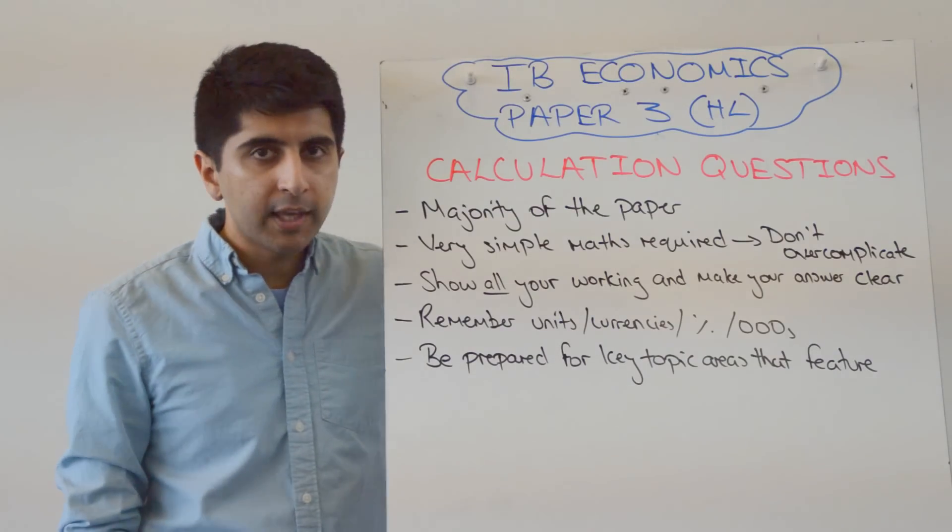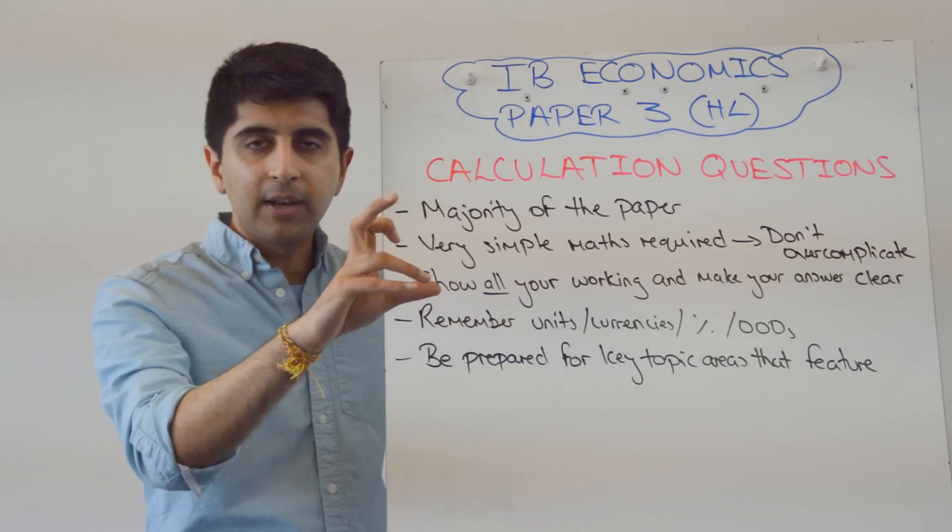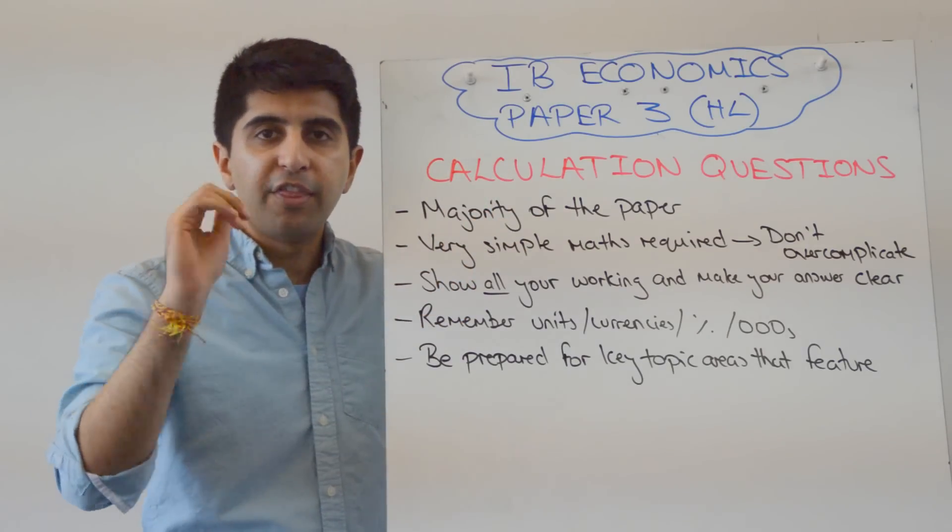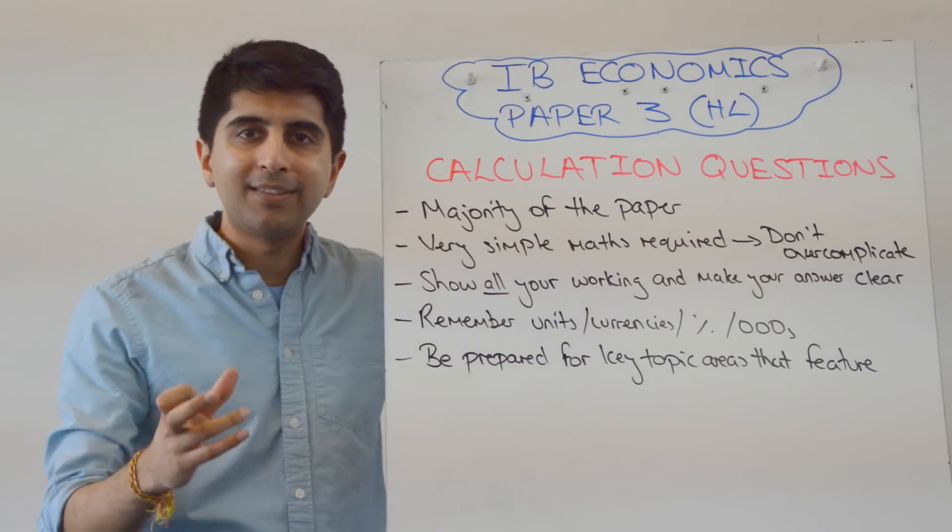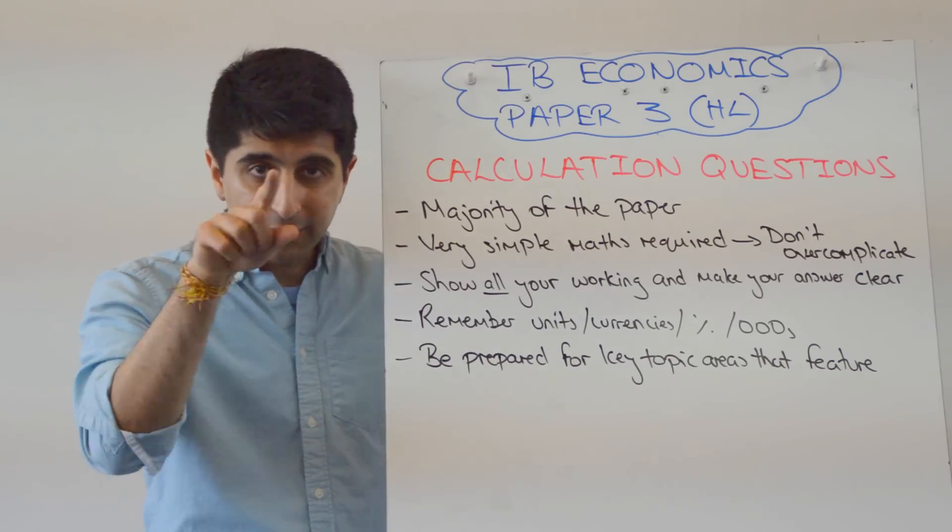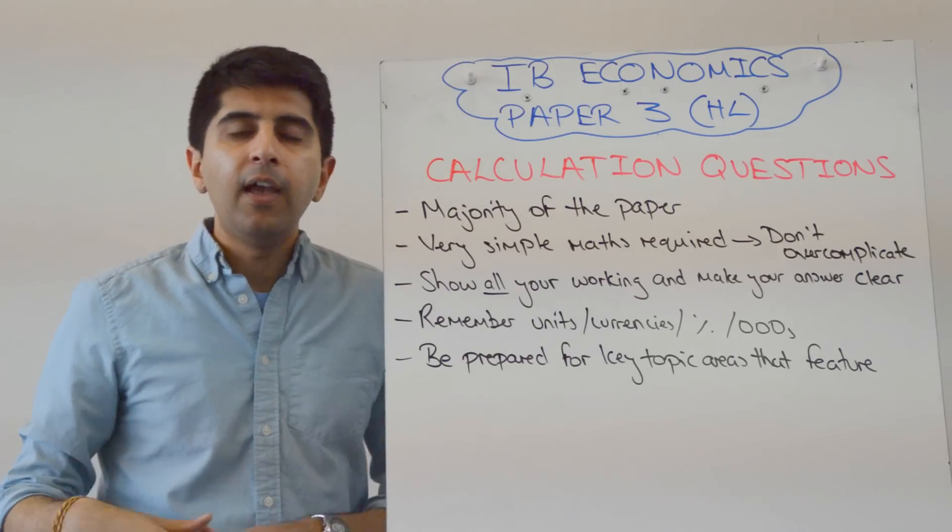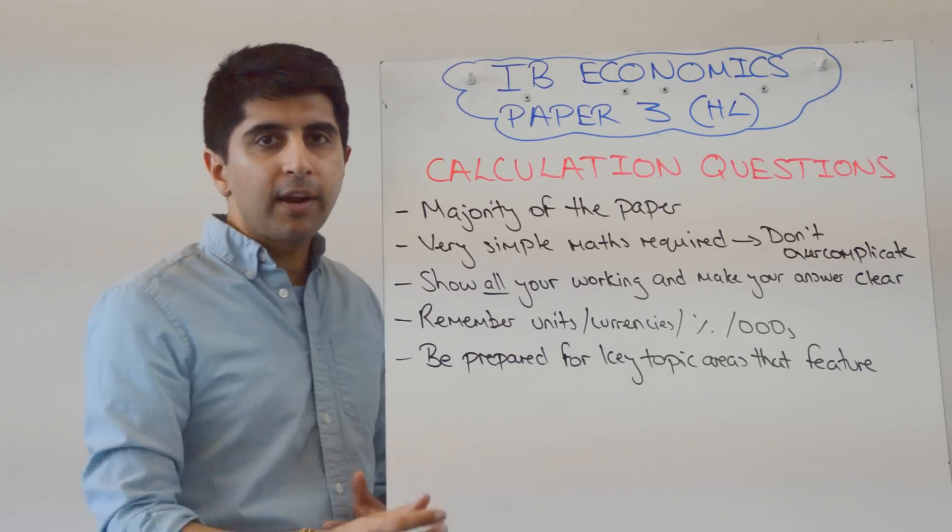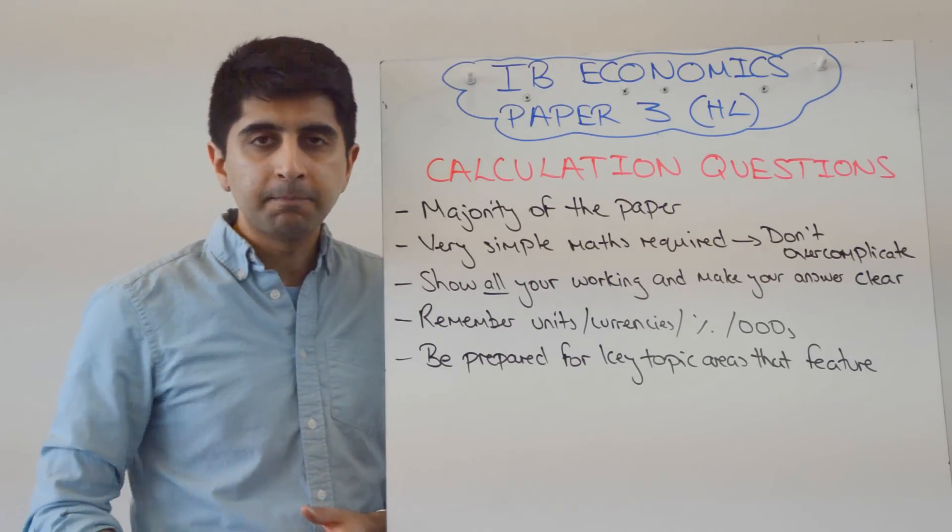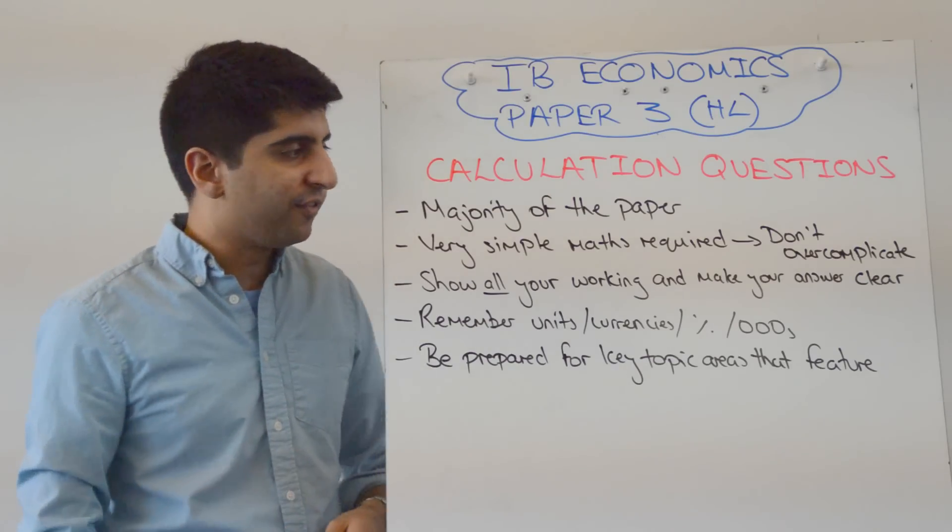Make sure that you show all your working. All of it. Starting just with the blank equation. Then put the numbers in the equation if necessary. Then your answer. Make sure your answer is clear. So show all your working and clarity with answer. If that's circling your answer, feel free to do so so the examiner can see it straight away. Examiners are marking it. If they see the right answer, you get the full marks. So making that clear will make it easier for the examiner to mark it and give you the full marks that you deserve.